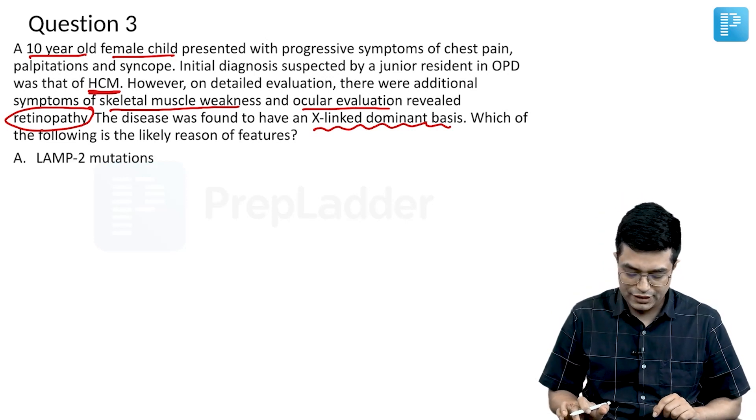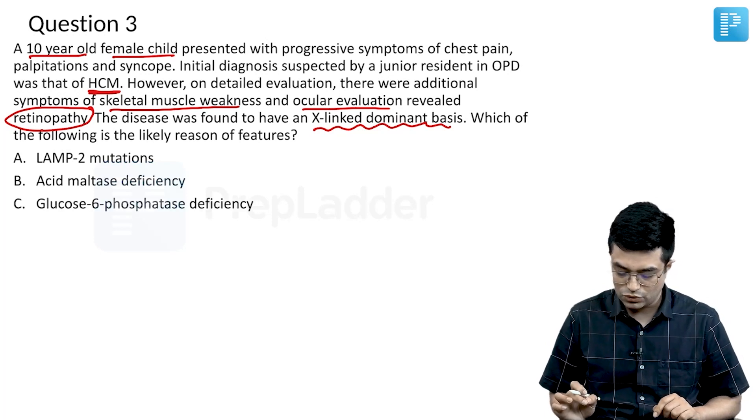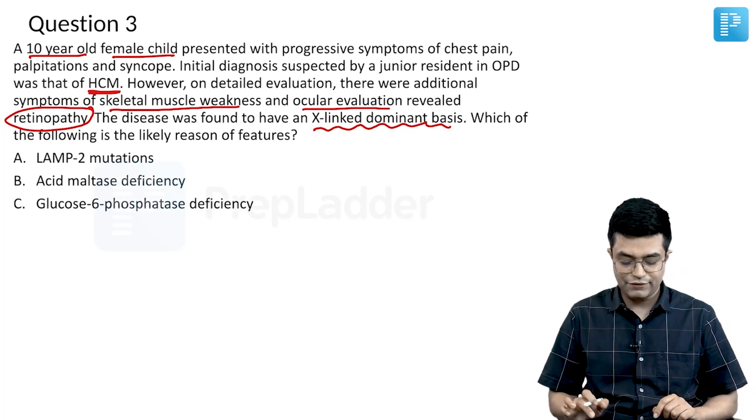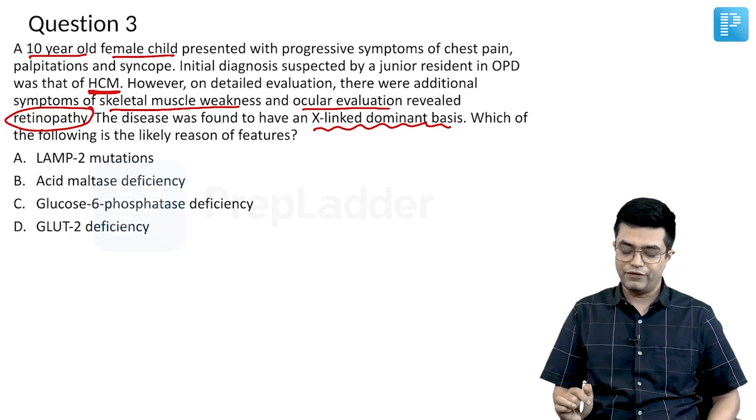We have four options here: Option A is LAMP2 mutation, Option B is acid maltase deficiency, Option C is glucose-6-phosphatase deficiency, and Option D is GLUT2 deficiency.